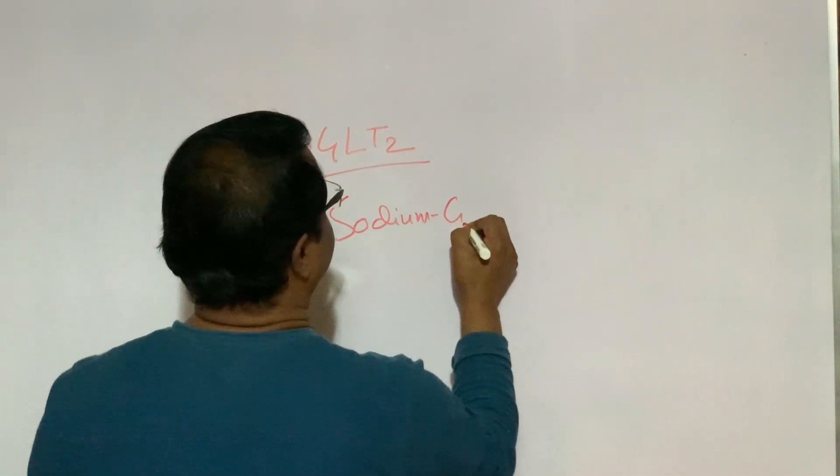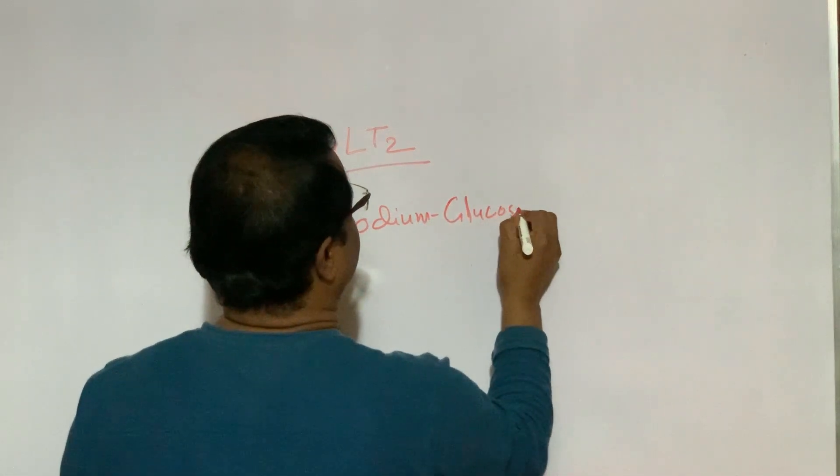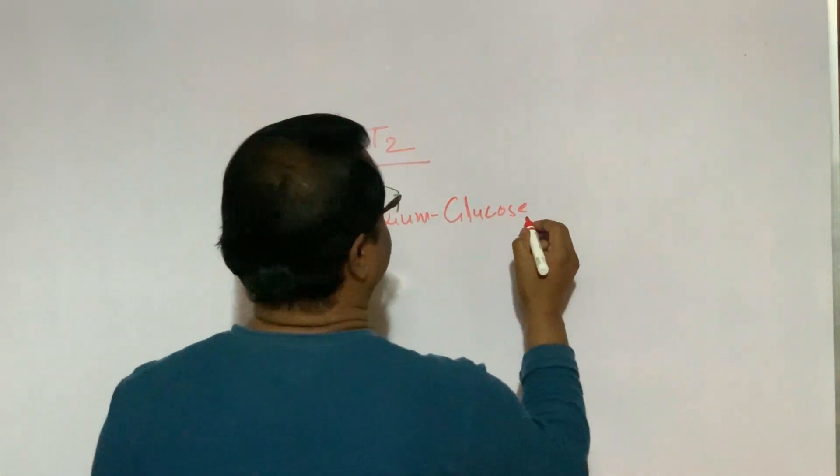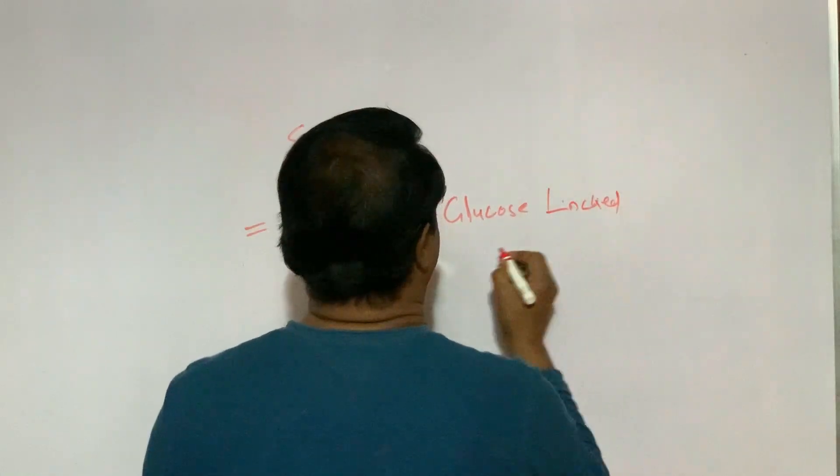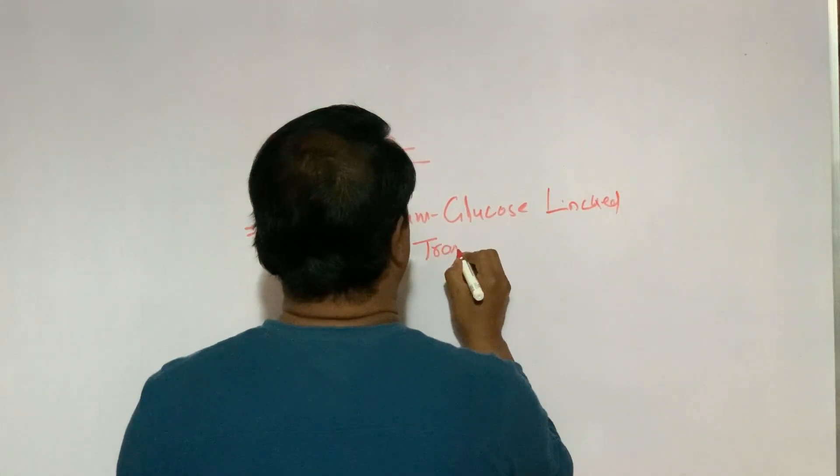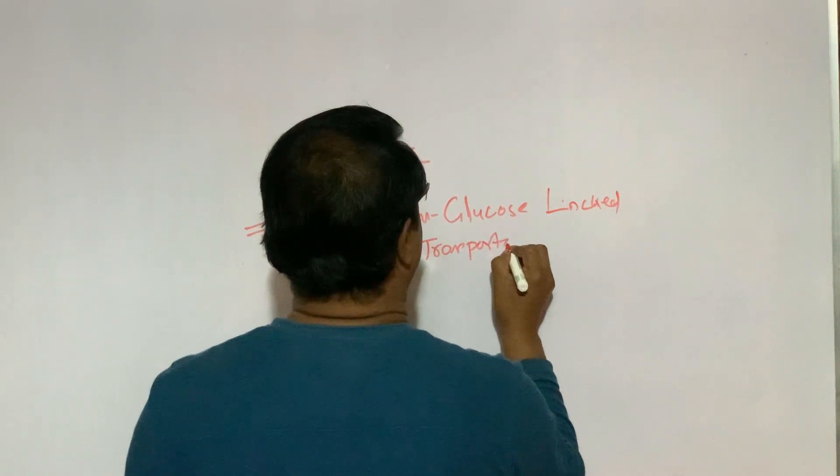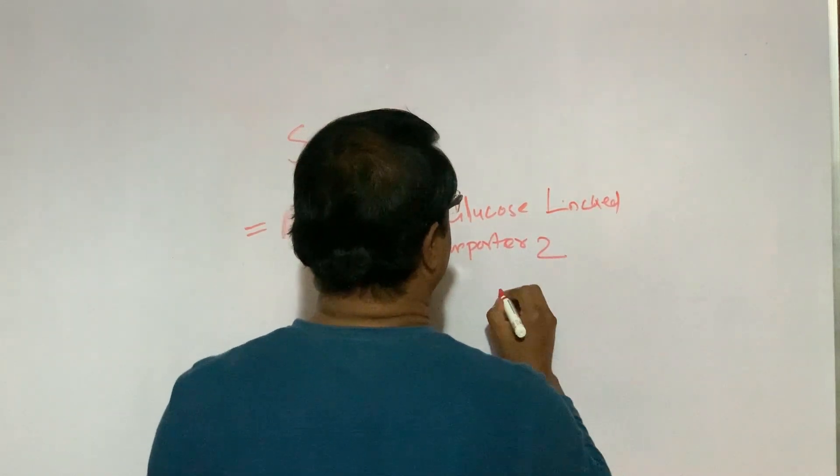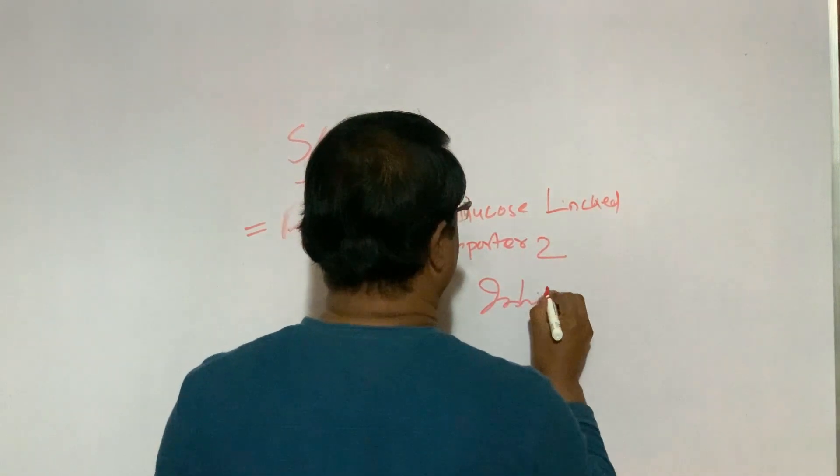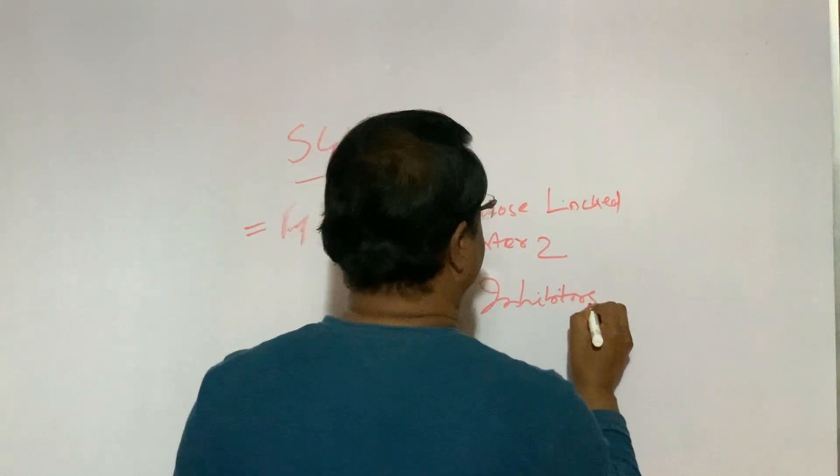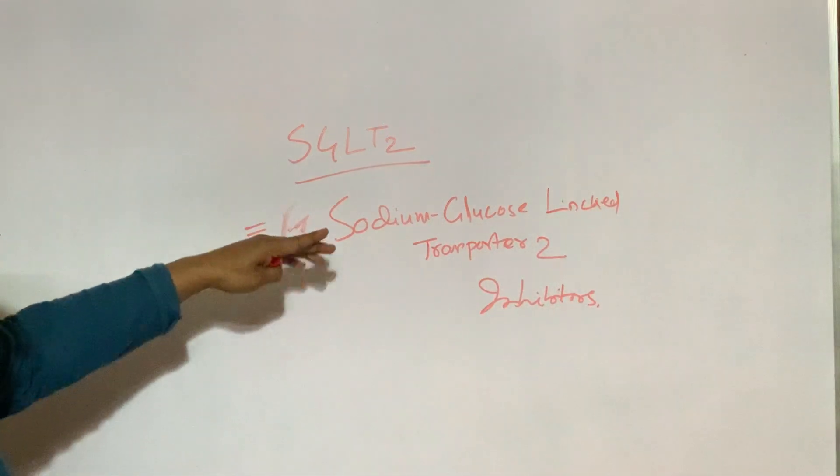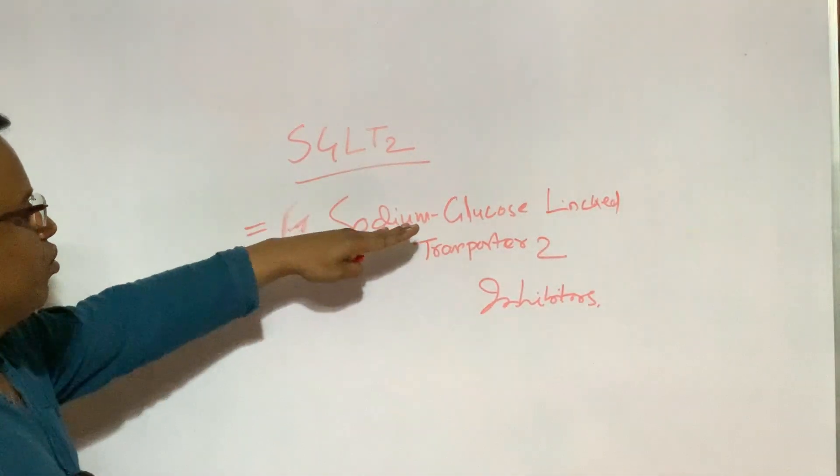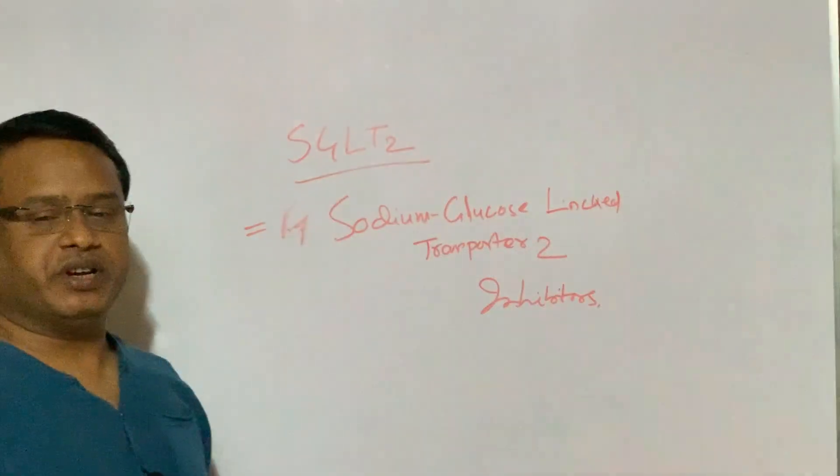SGLT2 means sodium glucose linked transporter 2 inhibitors. Sometimes the name sodium glucose co-transporter inhibitor is used.